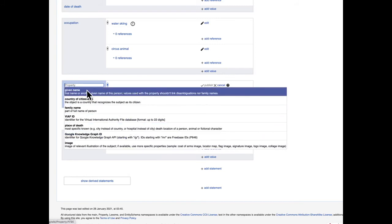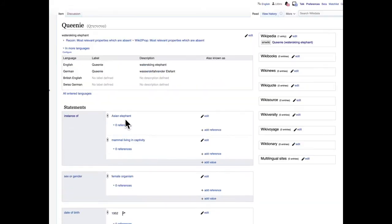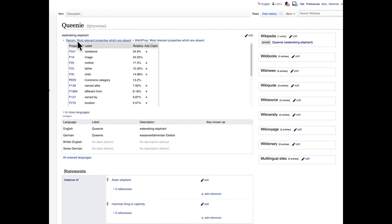Wikidata itself uses association rule sets to propose a first guess which is built on the most important properties over all articles. A further tool available in Wikidata is Recoin.